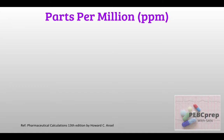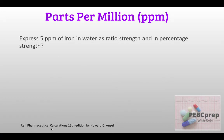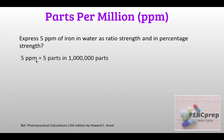All questions in this video are from Pharmaceutical Calculations, 13th edition, by Howard C. Ansel — we usually just call it Ansel. The reference is in the description below. First question: express 5 ppm of iron in water as ratio strength and as percentage strength. I will link my videos on ratio strength and percentage strength if you haven't watched them. 5 ppm means 5 parts in 1 million parts.